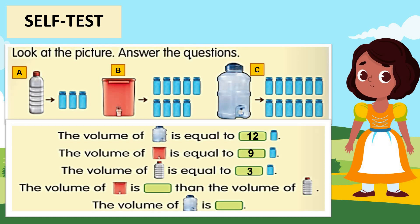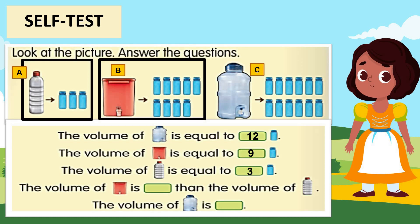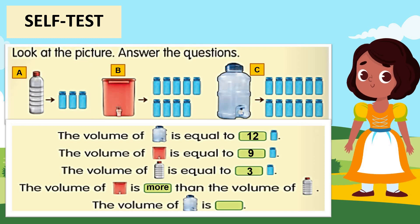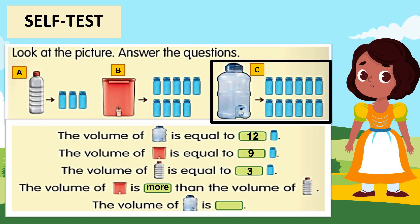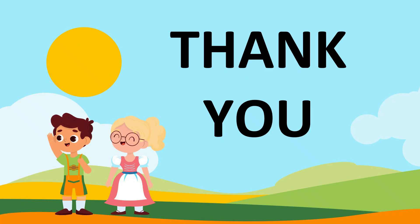So the volume of water dispenser B is more than the volume of water bottle A. The volume of water dispenser C is the most. That's all for today, class — see you all in the next lesson. Thank you and bye!